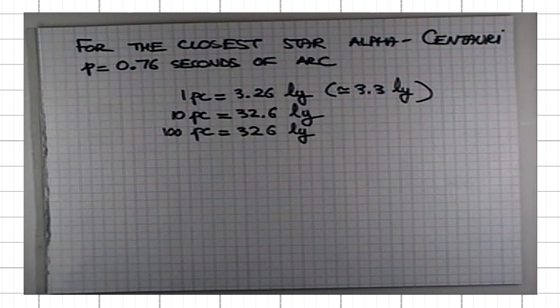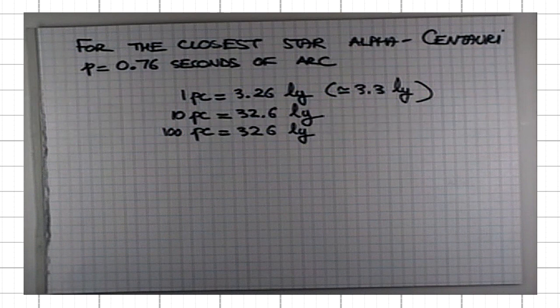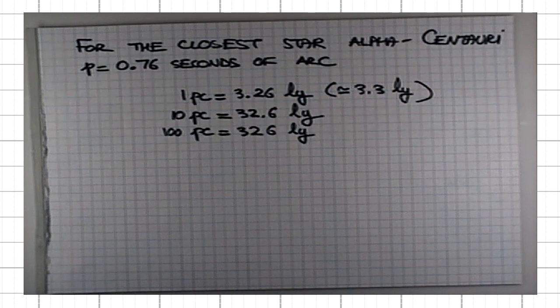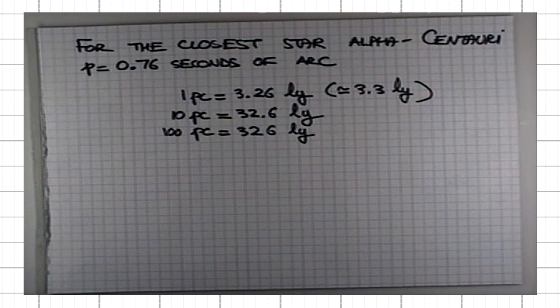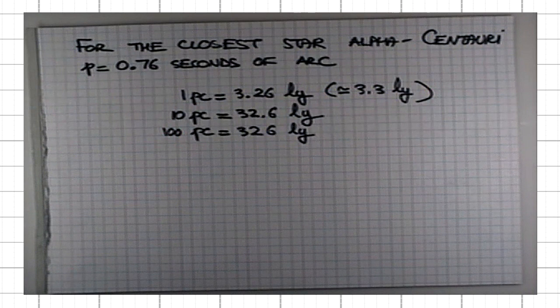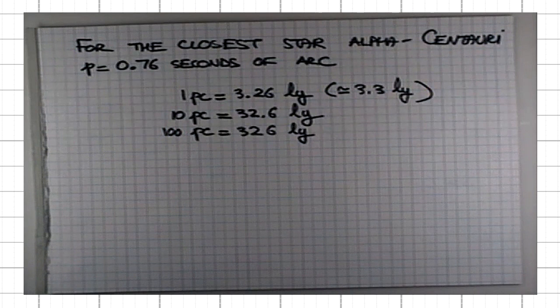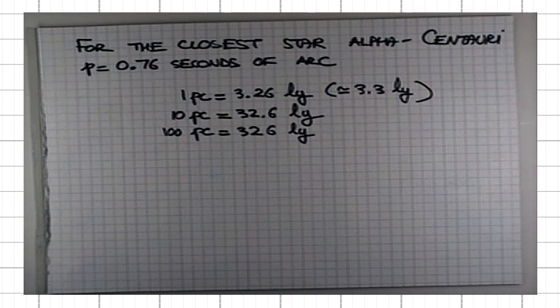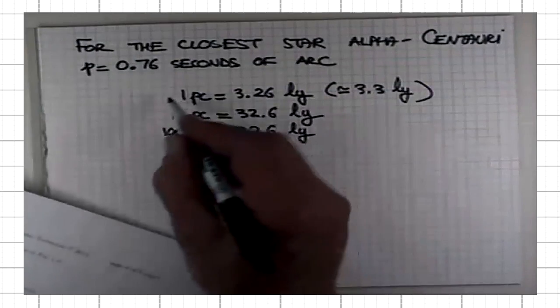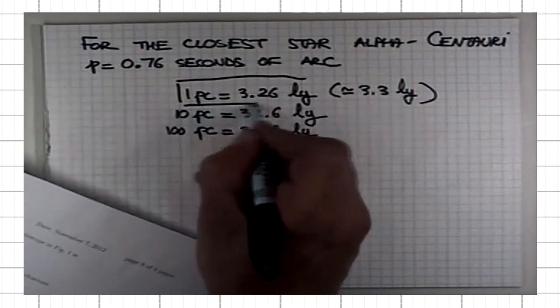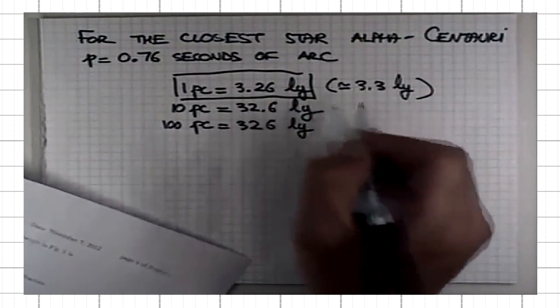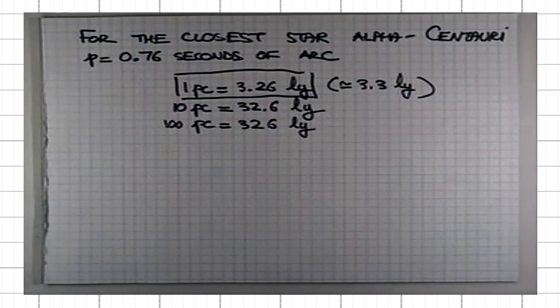Basically, there are two things you need to know. You need to know how the distance to the star in parsecs is related to its parallax angle, or vice versa, the distance in parsecs is 1 over the parallax angle expressed in seconds of arc, or vice versa, the parallax angle in seconds of arc is 1 over the distance in parsecs. That's piece of information number one that you need to know. The second one is this connection between parsec and light year, that one parsec is 3.26 light years.